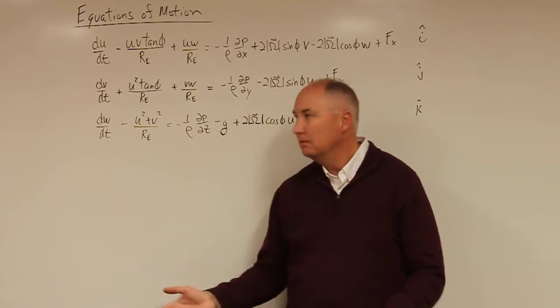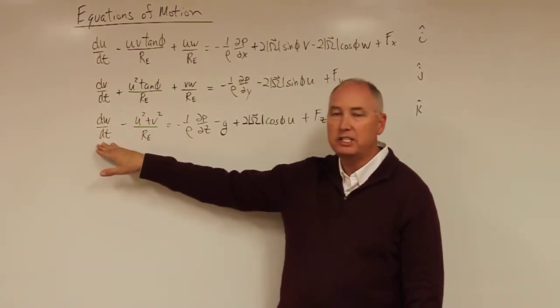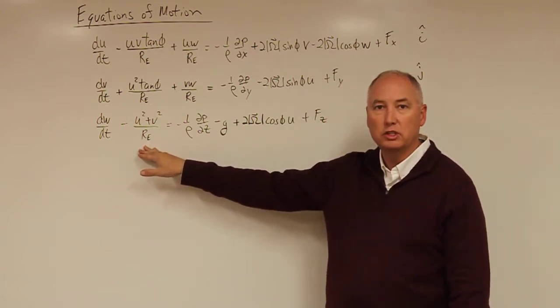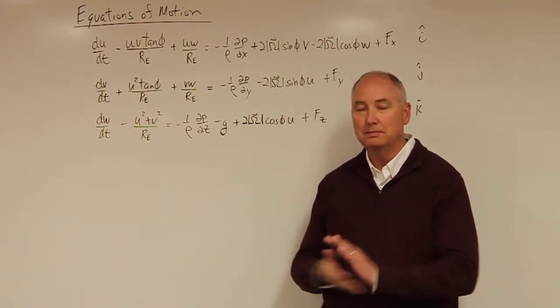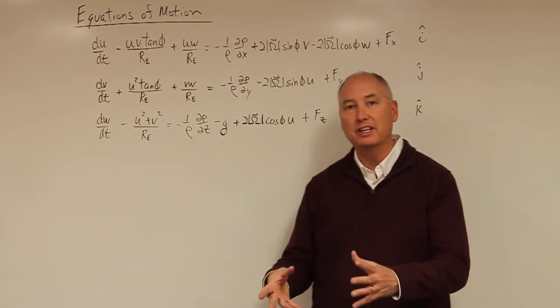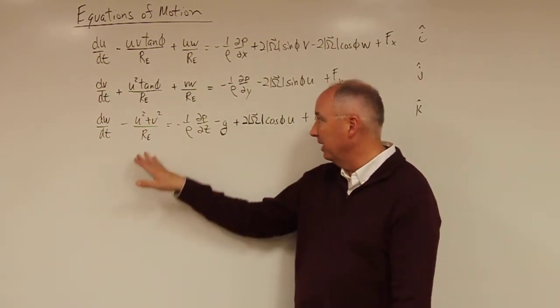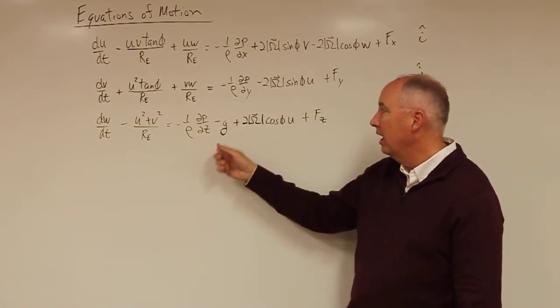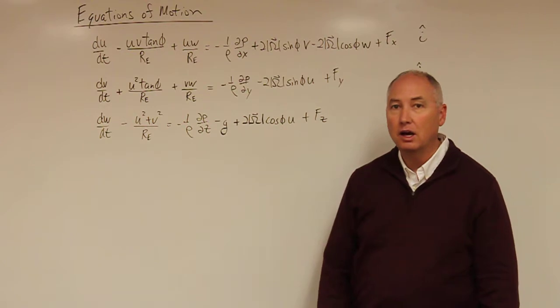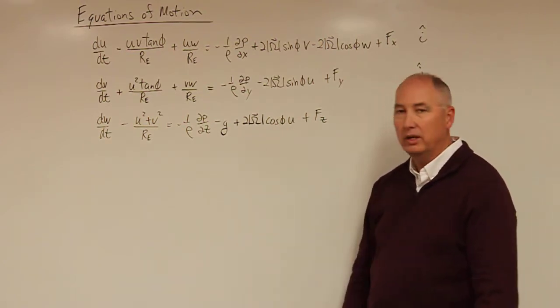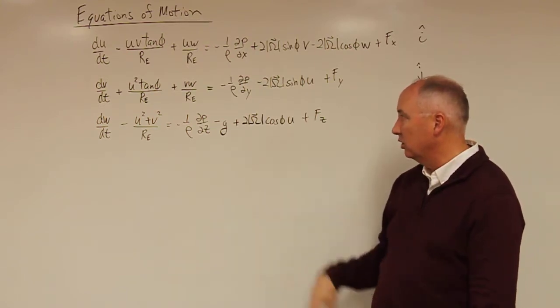In the vertical, we have dw by dt, the total derivative of the vertical velocity with respect to time, another term which is due to the rotation of the coordinate system as the planet turns. We have the vertical pressure gradient force, partial p over partial z. This time we have gravity, which is in the downward direction, and then we have another Coriolis term, and then we have a friction term.